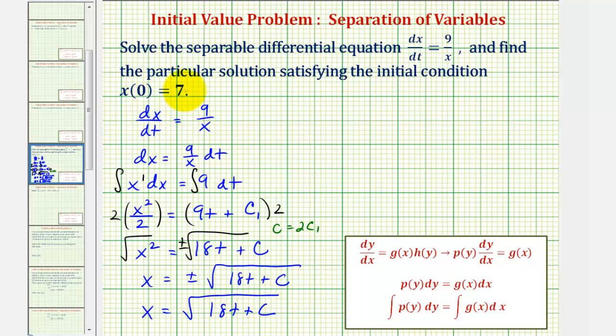So not only does x(0) = 7 tell us we're going to have a principal square root here, it's also going to allow us to find the value of c, this constant here, which will give us the particular solution.